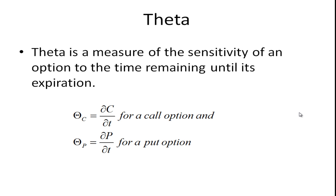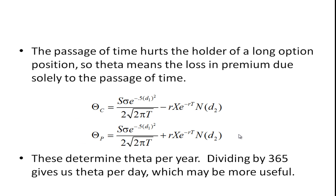The second Greek I want to talk about is theta, and that's a measure of the sensitivity of an option to the time remaining until its expiration. Theta, probably theta is used because T for time. And again, you take the partial derivative of the premium with respect to time. And if you work that out, you get this formula for the theta for the call option, and this theta for the put option.